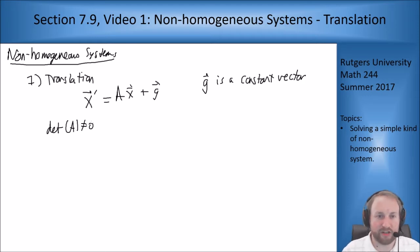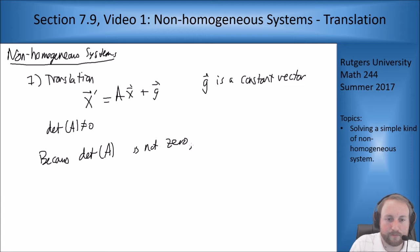We're going to assume the determinant of a is non-zero just for convenience sake. So our system's almost homogeneous. How can we solve this problem? Because determinant of a is not zero, we can solve a times some vector b equals g for b.